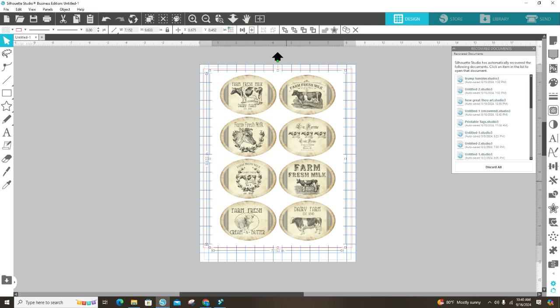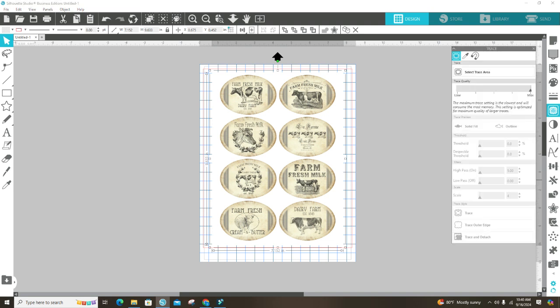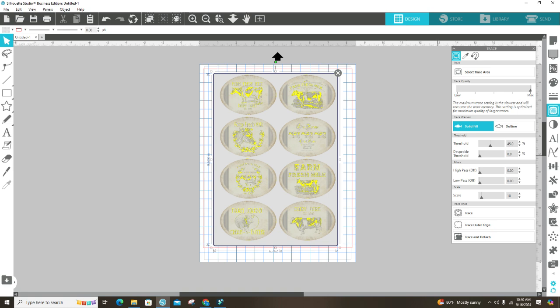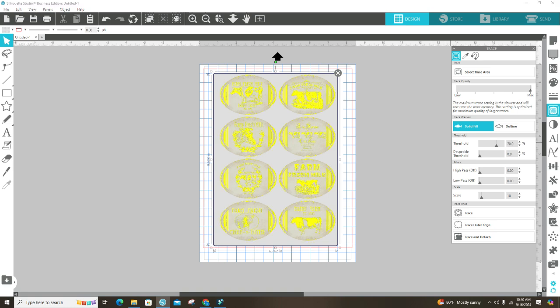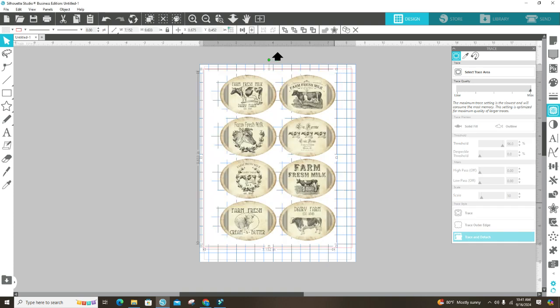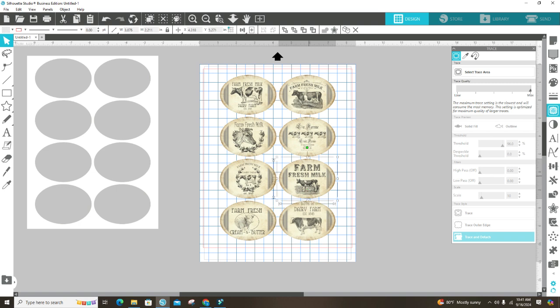I need to do the trace. So I'll select trace, and then I'll highlight all these labels. Then I'm going to go over here to the threshold and pull it all the way up. Then I'm going to trace and go up here and hit trace and detach. Now I'll pull the white off and I have each individual label.